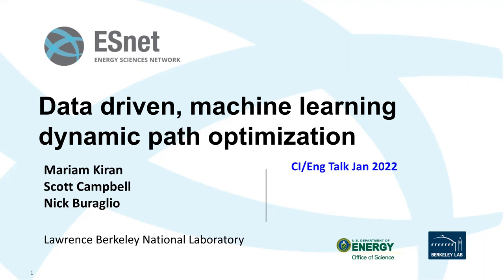Thank you, Jason. Hi everyone. Happy New Year. We're going to be talking about our work, which we've been working on for more than a year now, called Data-Driven Machine Learning Dynamic Cloud Optimization. Today's talk is going to be focused on how we've designed AI and how we've got the AI to make sense that it's doing the right thing. Scott and Nick will talk about how we're actually building the project, Hecate, and how we're going to take it forward.